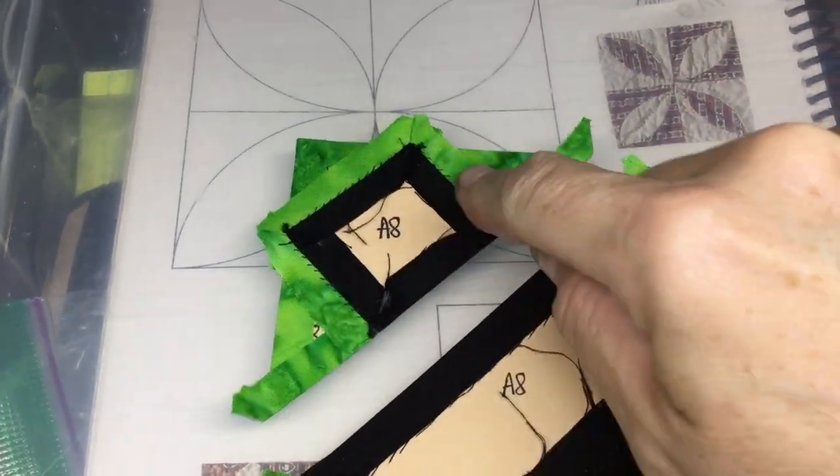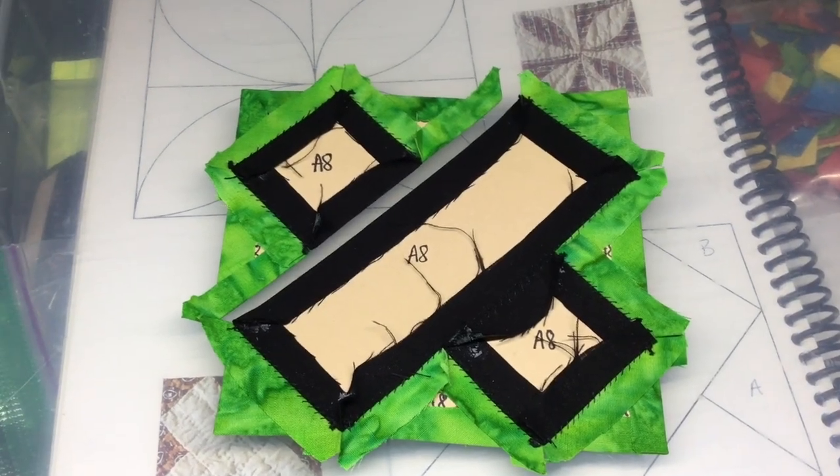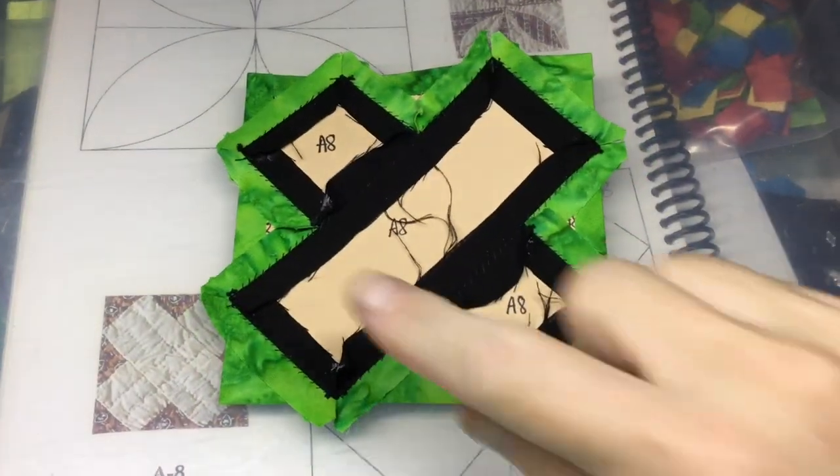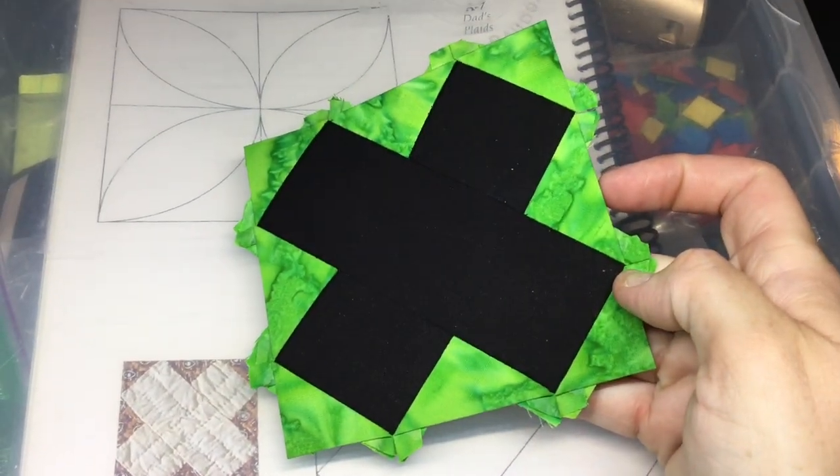So I have put together this last corner, and I will attach it to the rest of the block. So I've attached the upper corner to the rest of the block, and my A8 block is now completed.